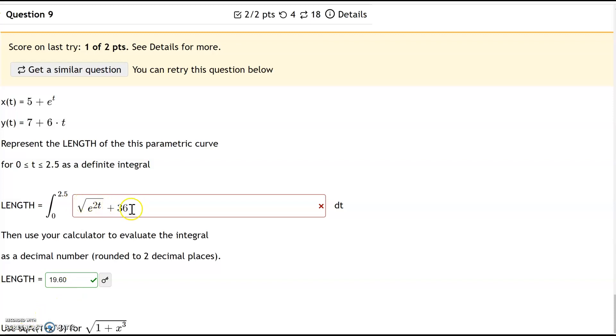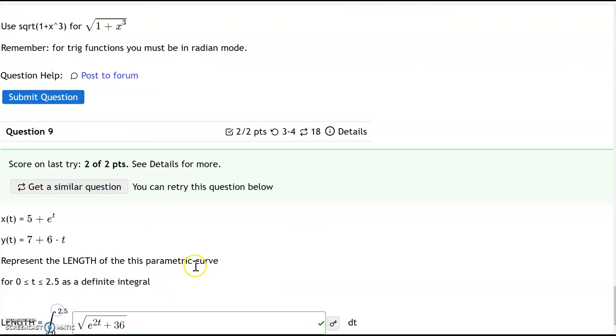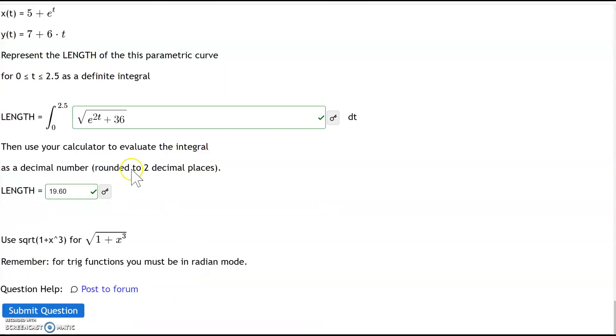Okay I see what happened. The square root didn't go all the way over. Let's fix that real quick. So it's e^(2t) plus 36. There we go, now it should be right. Submit question. There it is. So that is the answer to this question.